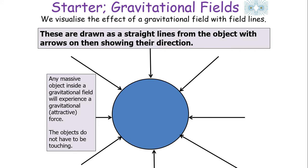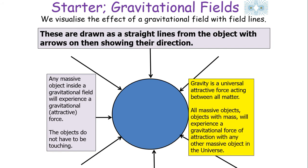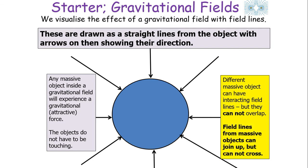It's very important that we draw field lines with a certain set of rules. We draw gravitational field lines as straight lines from the object with arrows showing their direction. Any object with mass inside a gravitational field will experience an attractive gravitational force — objects do not have to be touching to have this force. Gravity is a universal attractive force acting between all matter, and different massive objects can have interactive field lines, but they can never overlap or cross.